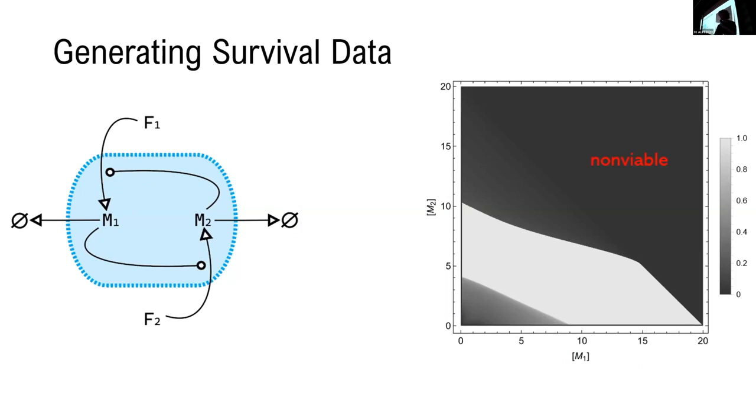And what we end up finding is that there's one non-viable region where the protocell never got started, then there's an asymptotically viable region where it survived for the entire time, and then there's two transiently viable regions where it did survive for some amount of time but did not survive for the full tested duration.